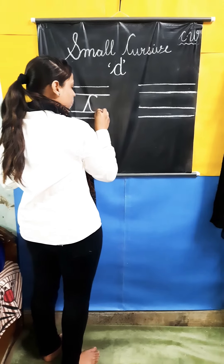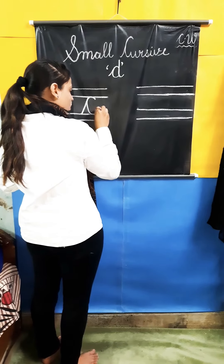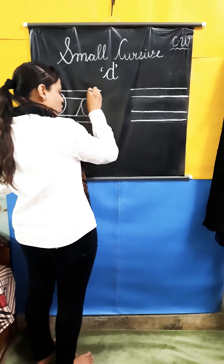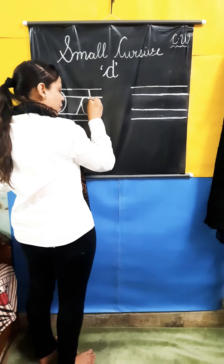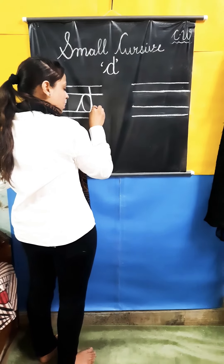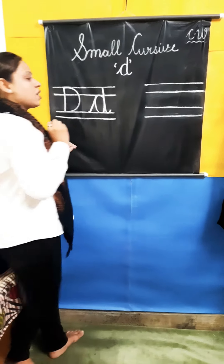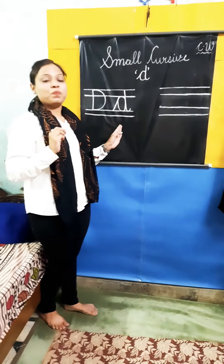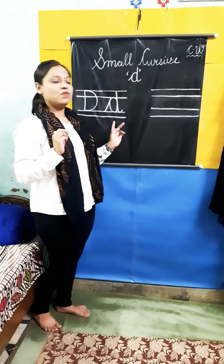And without taking up the pencil, go up till the first line and come back to the third line with a small curve like this. So this is how you have to make small cursive D.